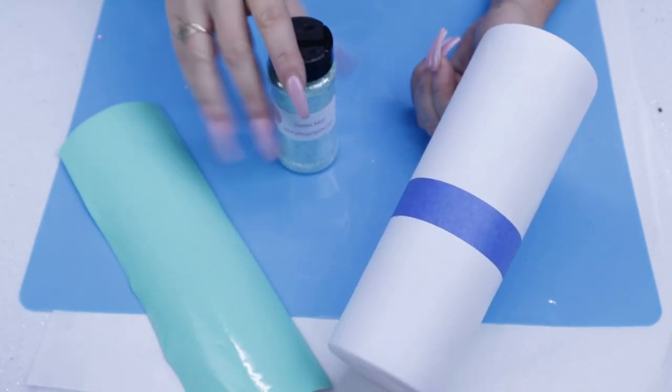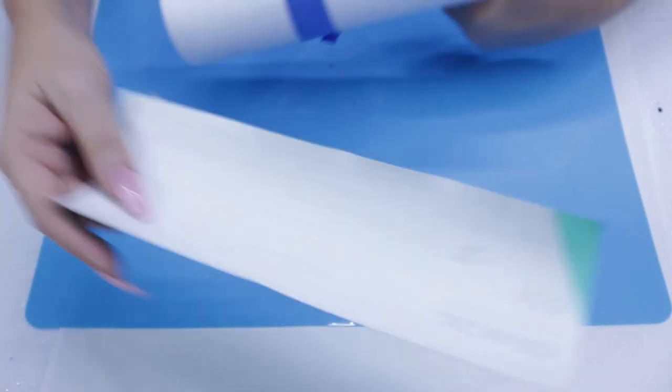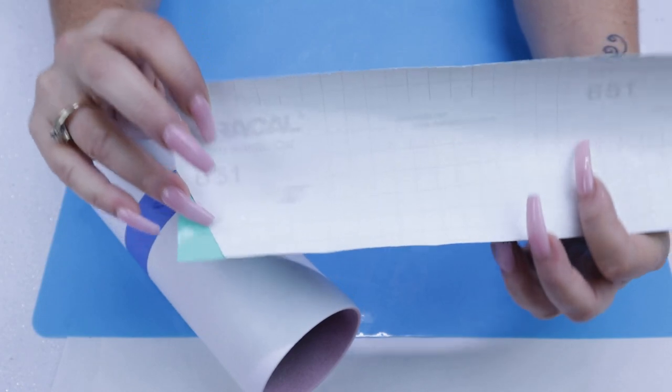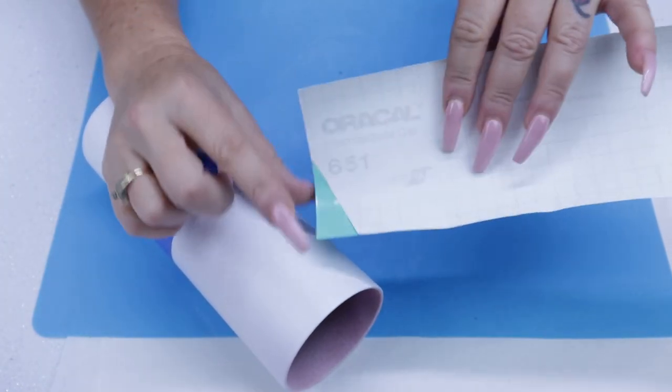You can see I've already painted the cup white and taped it off. I've left about three inches at the bottom, which is where we're going to place our vinyl.